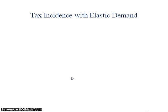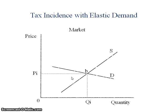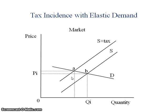Let's take a look now at the case of elastic demand. I've drawn a nice shallowly sloped demand curve. I'm going to pass my tax, label the new curve S plus tax, and make a note of where that tax intersects my demand curve, establishing my new market price and new market quantity.